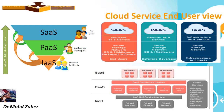Cloud service and user view. The three service types are: Software as a Service, Platform as a Service, and Infrastructure as a Service. For IaaS, the user manages server, storage, network, operating system, middleware, packaged software. For PaaS, the provider manages server, storage, network, and operating system. For IaaS, the provider manages server, storage, and network.